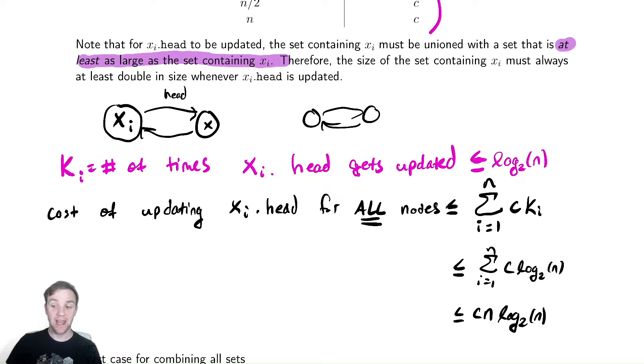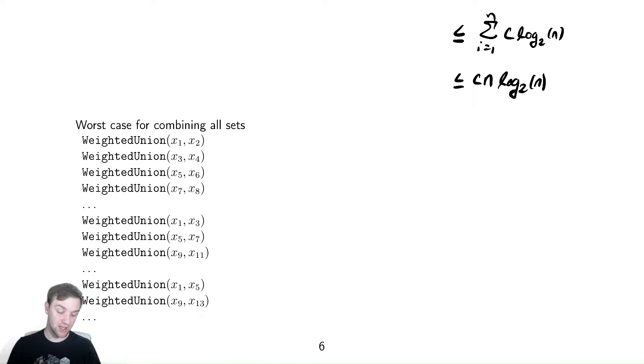How are we going to find a lower bound? We're looking at the worst case. We have this written in a funny way. We're going to look at the worst case for building up all of the sets. Step one would be we need to perform make set for each xi, which would cost cn, because we need to do it for n different things and each make set takes constant time.